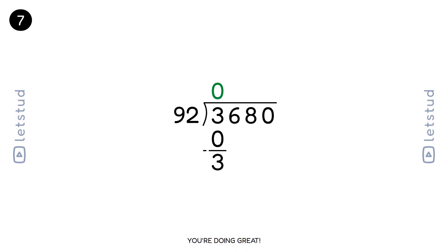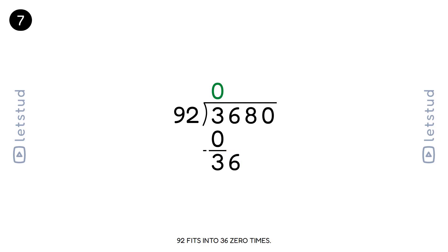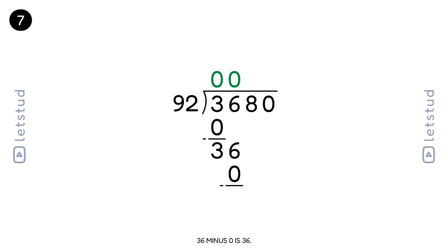Let's bring down the next digit. We have a remainder of 3 and bring down the 6 to make 36. 92 fits into 36 zero times. 0 times 92 is 0. 36 minus 0 is 36.